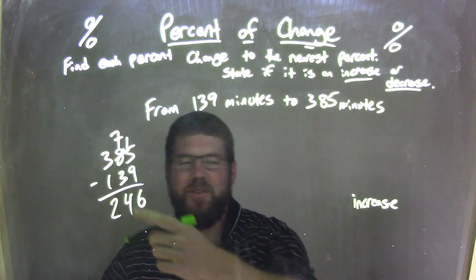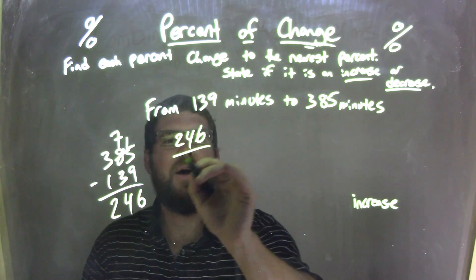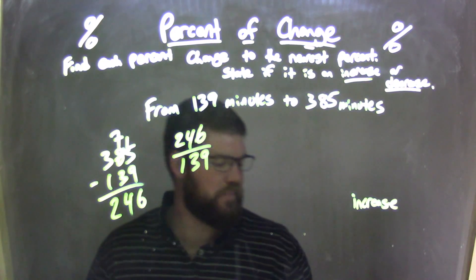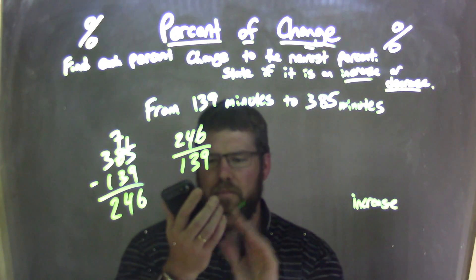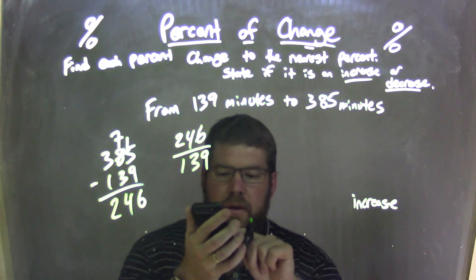Or not my answer, rather this little problem here. I'm going to take that 246 and divide it by my first number, 139. So 246 divided by 139.